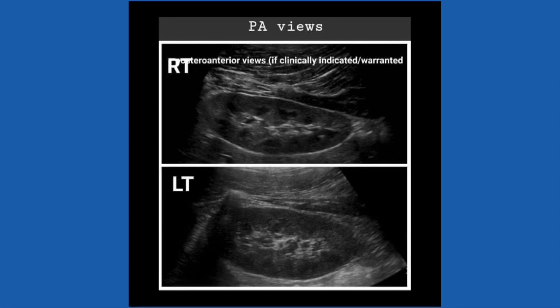This last part may not be routine in most labs, but once you're done with the sagittal images in supine, ask the patient to move prone for posterior-anterior views. Once the patient has gotten over the confusion of whether to turn left or right, you're ready to begin scanning in PA. Sometimes you can get a little bit more accurate measurements in the PA views.